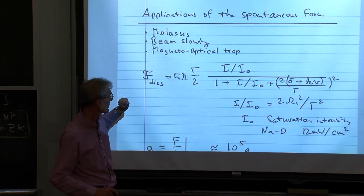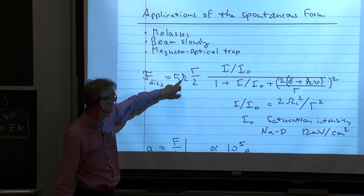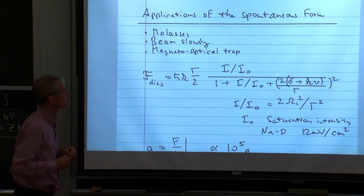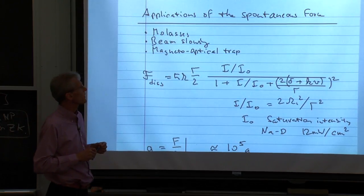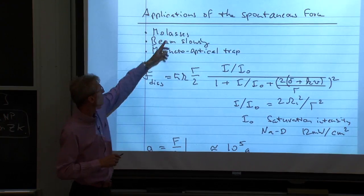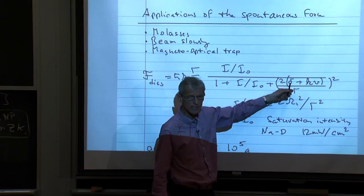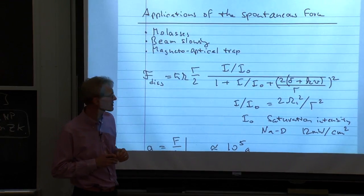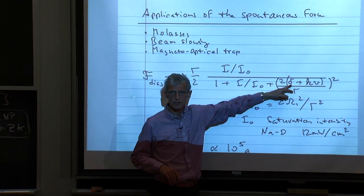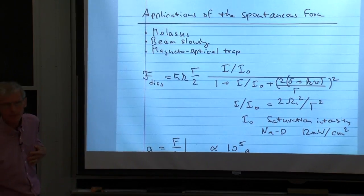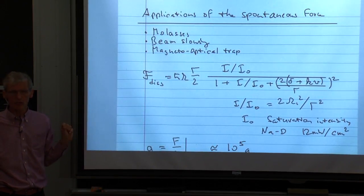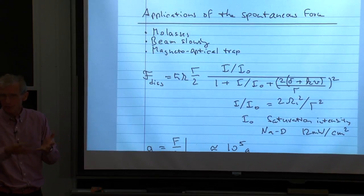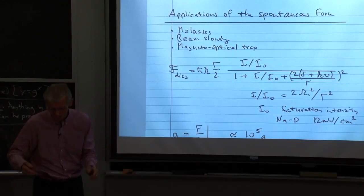The force has the momentum transfer per photon, the maximum scatter rate gamma over 2, and the Lorentzian line shape. When we talk about molasses and beam slowing, the detuning is the laser detuning plus the Doppler detuning — the velocity dependence enters the spontaneous force through the Doppler effect in the Lorentzian denominator. Laser beams measure the velocity of atoms through the Doppler shift, and it is the Doppler shift which tells the laser beams what to do. This is how laser cooling works.